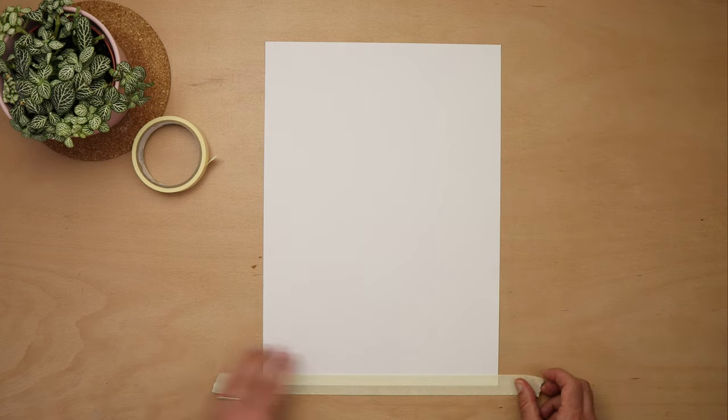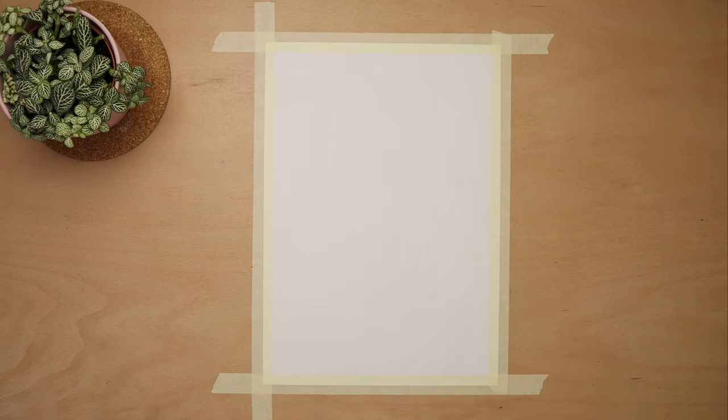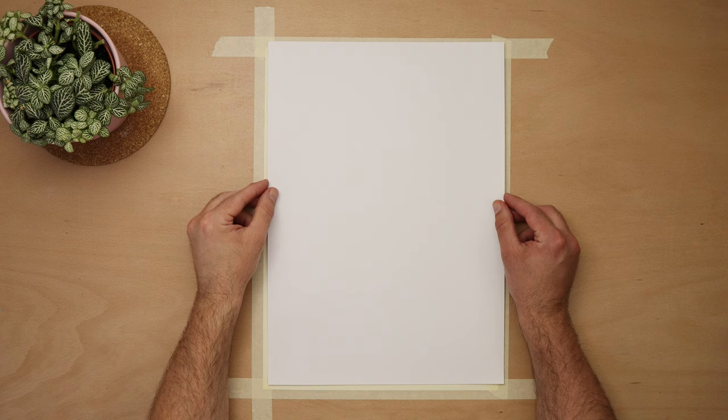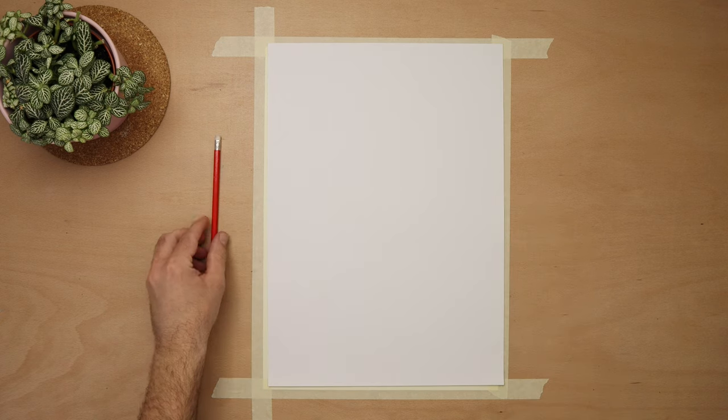Use the tape to stick down the edges of the first piece of paper. Stick the tape to your jumper first though to stop it from being too sticky and ripping your paper at the end. Place your second sheet of paper on top, grab your pencil and a leaf.